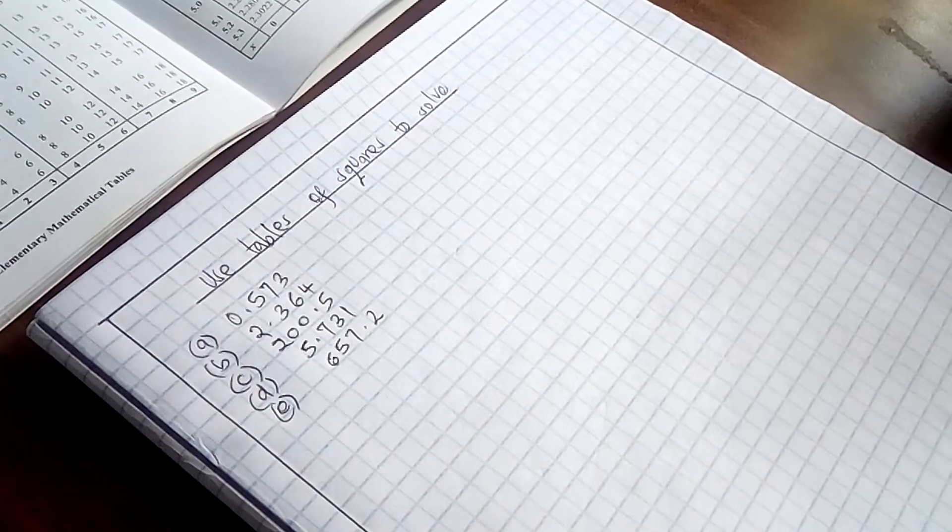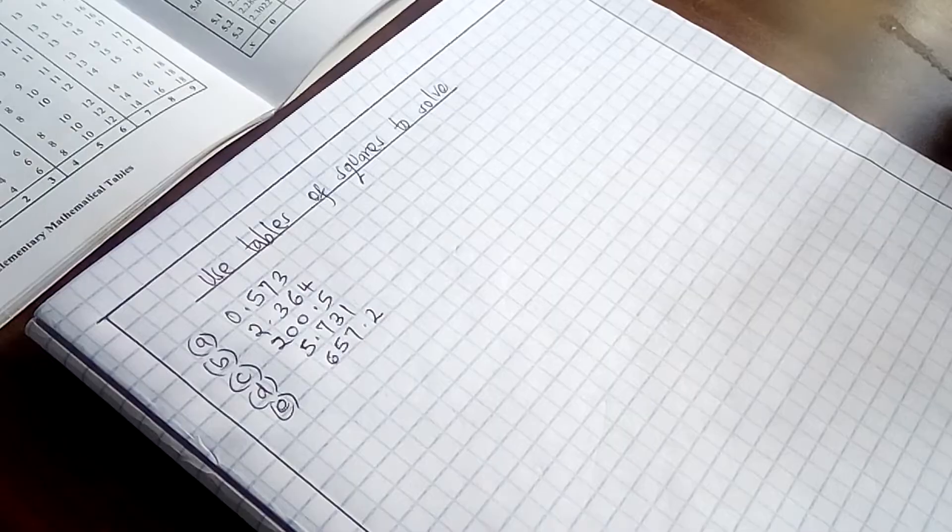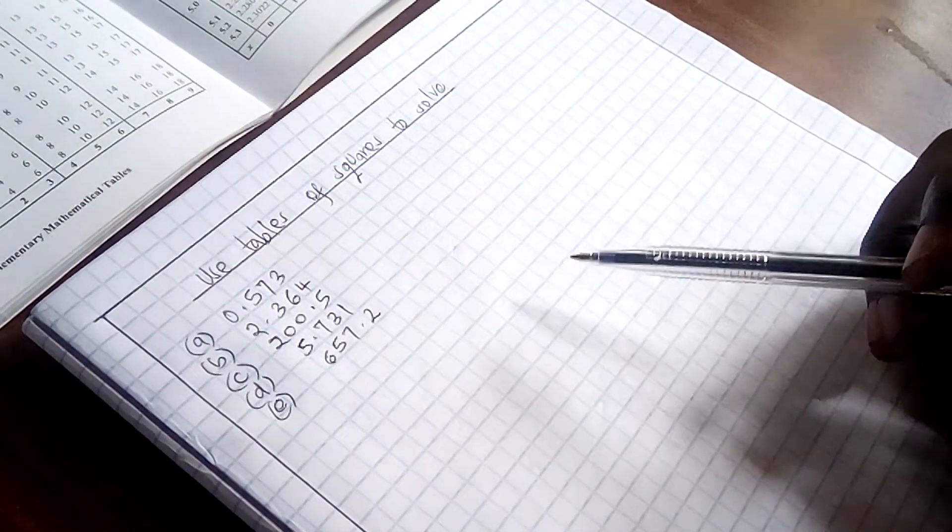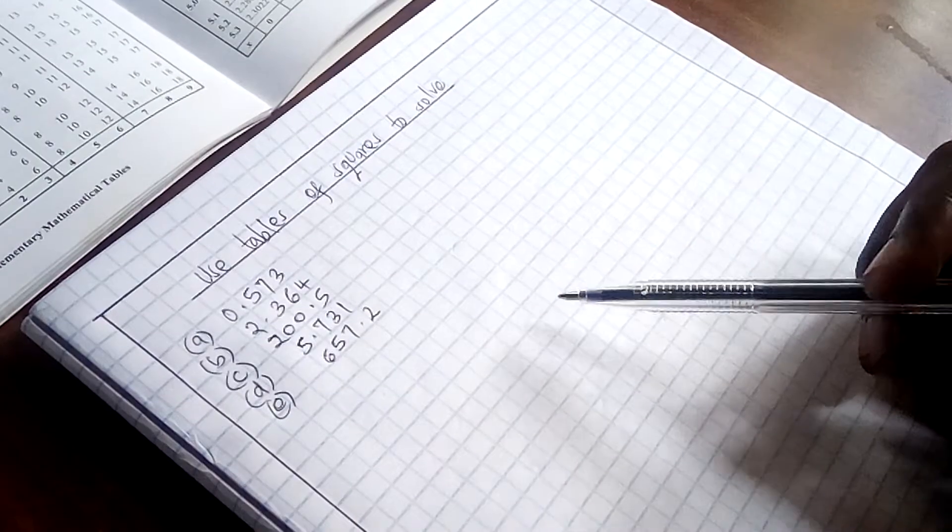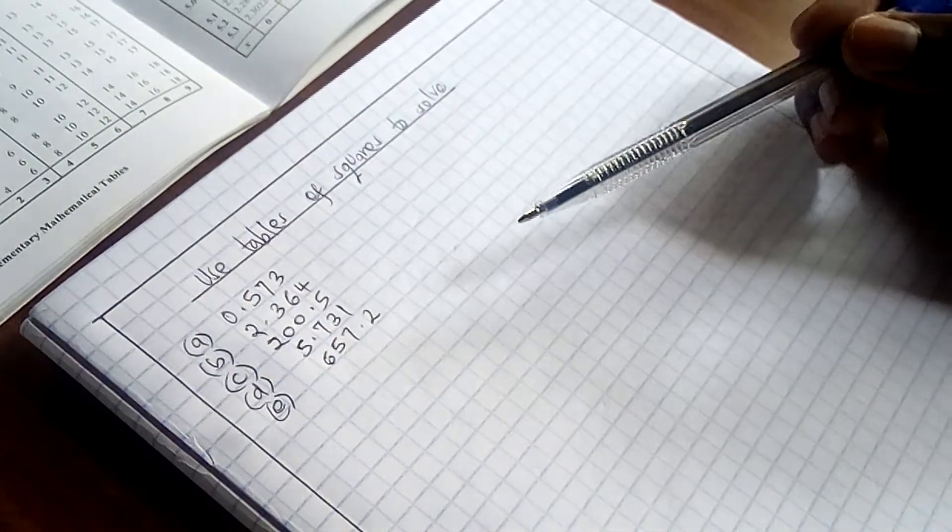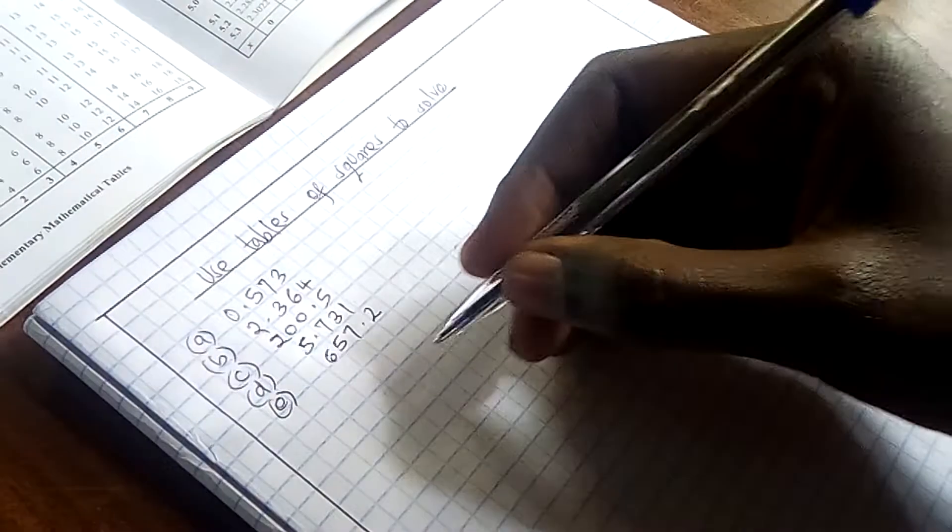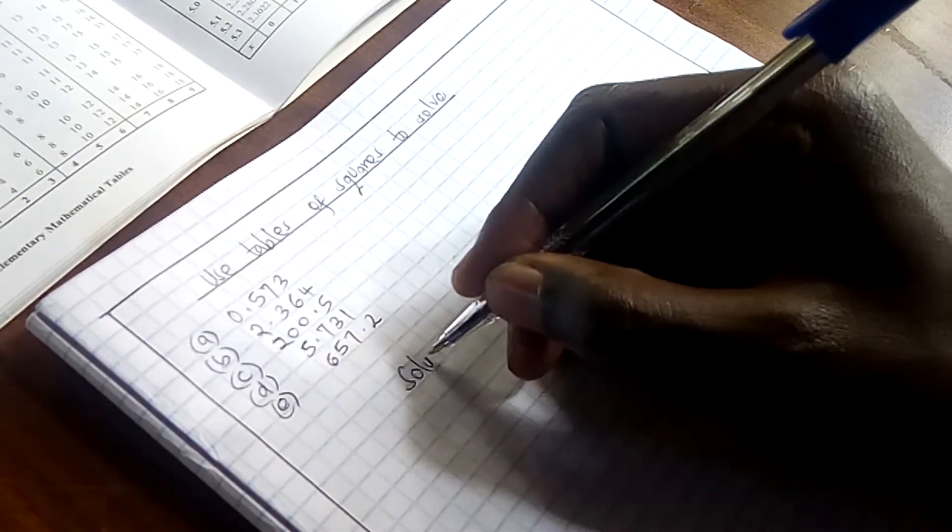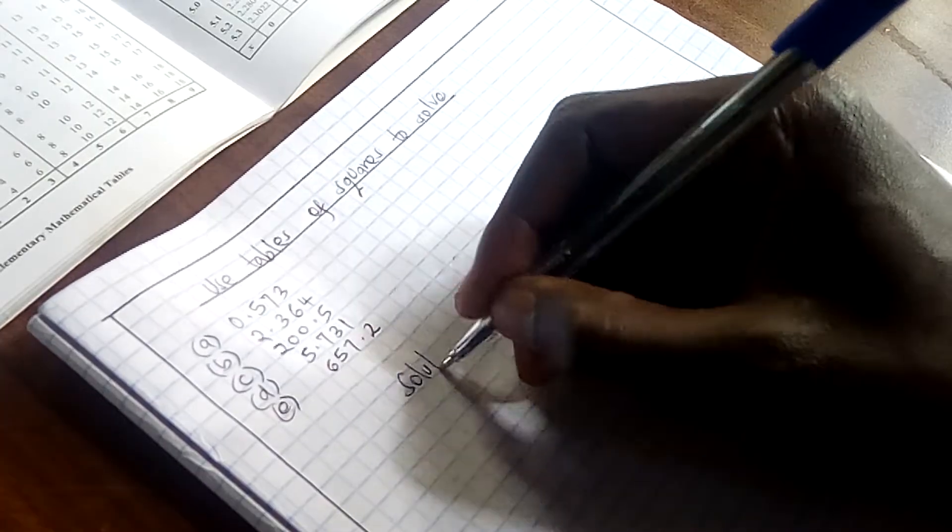So let's look at some examples on how we can use tables of squares. We are going to use tables of squares to solve the following examples that you are seeing. So let us get the solution of each and every example that we have.